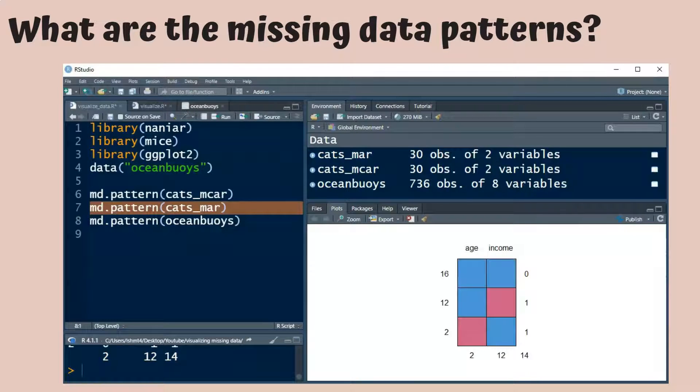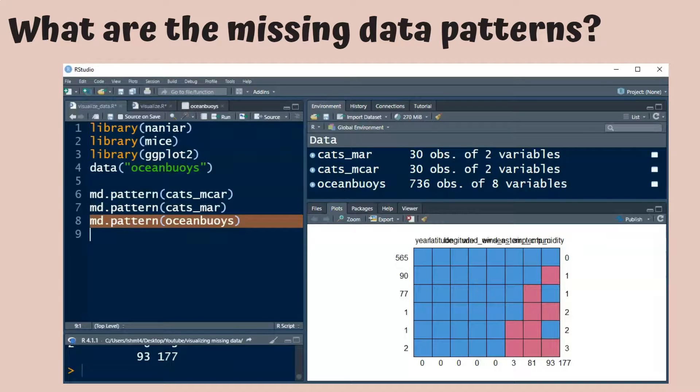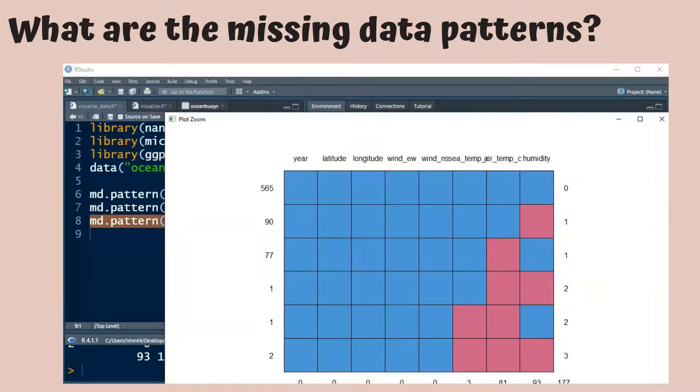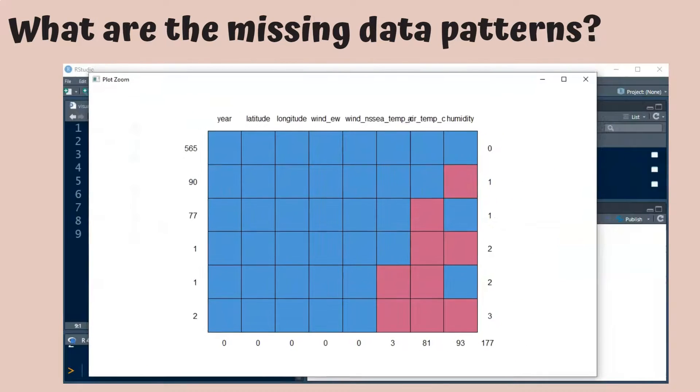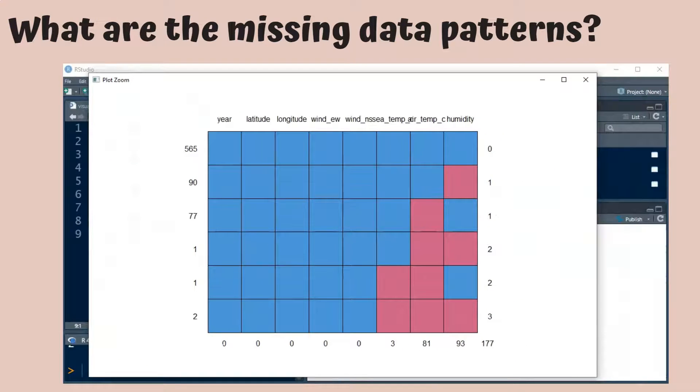For the cats MAR data set, we see a similar plot, but the frequencies have changed. And for the ocean buoys data set, we see a more complicated plot showing that the first five variables are observed, and these last three variables can be missing in different configurations. And note that the plot orders the patterns by frequency.